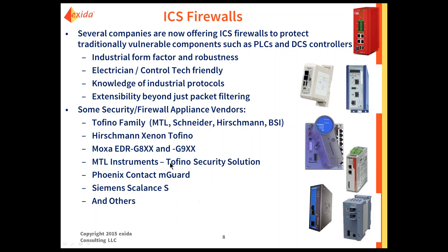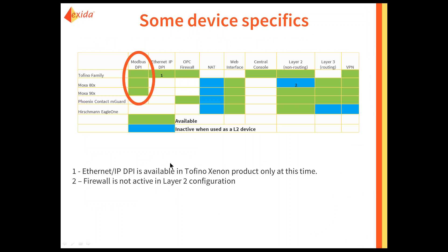There are a number of other industrial firewalls out there on the market today. A few of the device specifics — and the red circle indicates the one we're going to discuss today — a number of them have Modbus, Ethernet/IP, and OPC awareness. They can be used as a Layer 2 non-routing or a Layer 3 routing device in some cases. Some have integrated web interfaces for configuration; some use a centralized management software package; some have a combination of both. The ones we're going to discuss today are the Tofino family and the Moxa 900 family, as those are the two I have evaluation units for and can show actual screenshots.